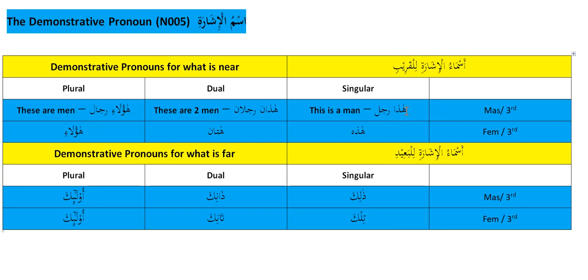I say 'third person' because when you indicate something you're talking about the thing. If you're talking to someone you don't indicate them, you address them directly. But when I'm speaking to you about something, I point it out. I can also talk about you to someone else, in which case you become the third person. So for feminine, we say 'hadhihi' — this is a woman.